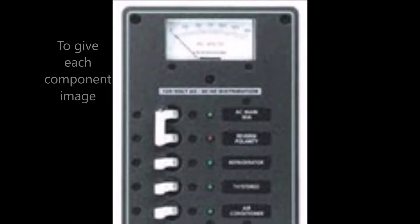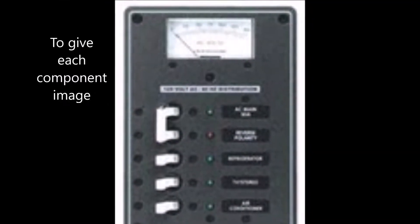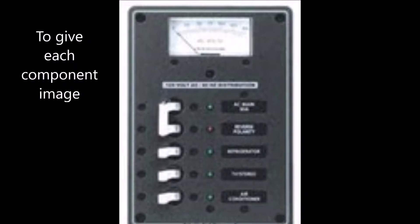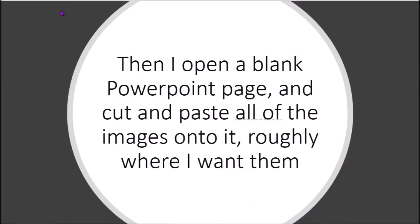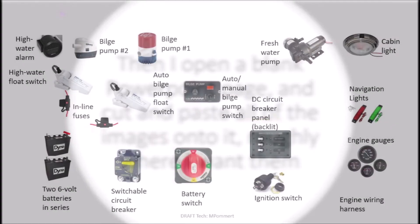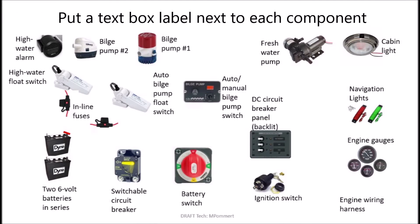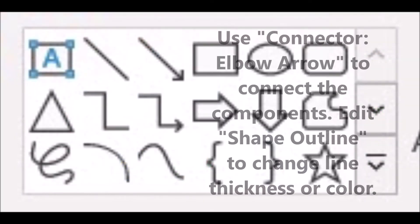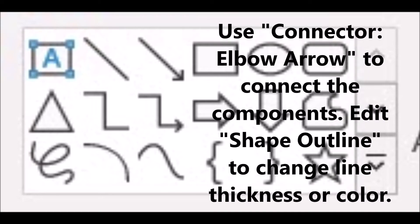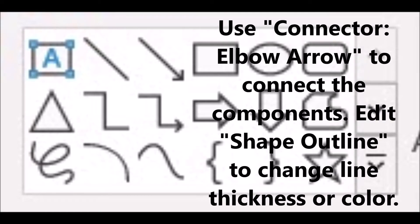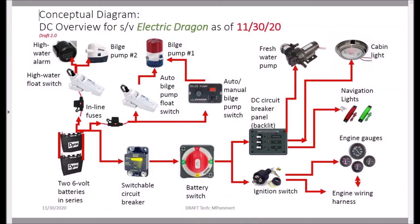So it looks like this. I take all of those component images, open a blank PowerPoint page, and paste them down roughly where I want them on the page and add a text description. Then I use the connector elbow arrows to connect the components, and I change the color and the shape — and that gives me an image like this.